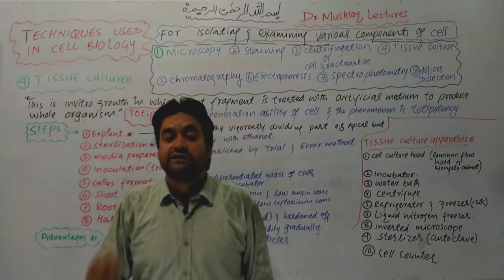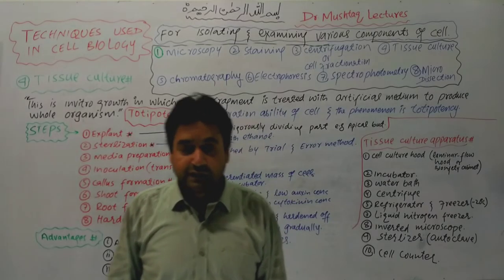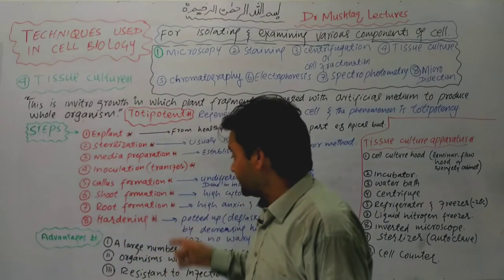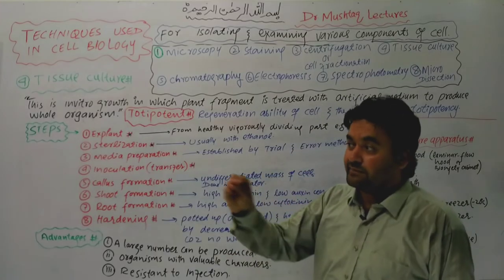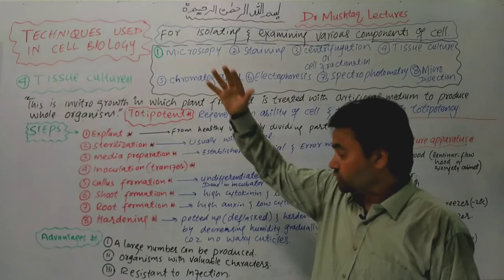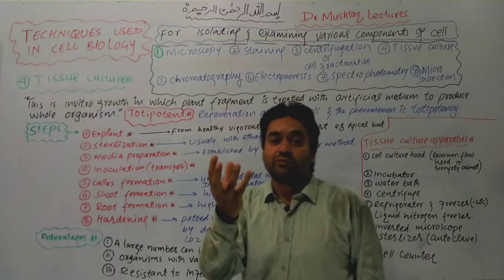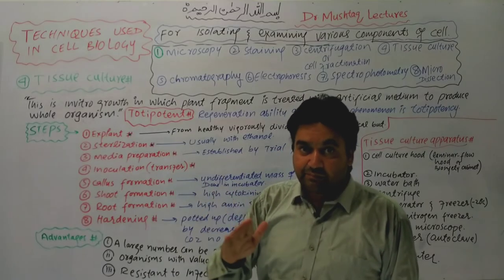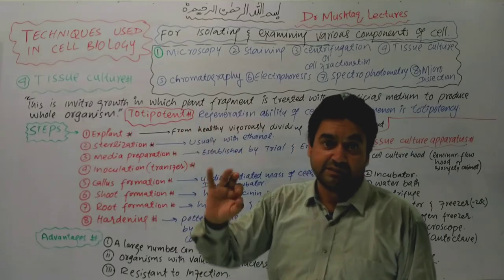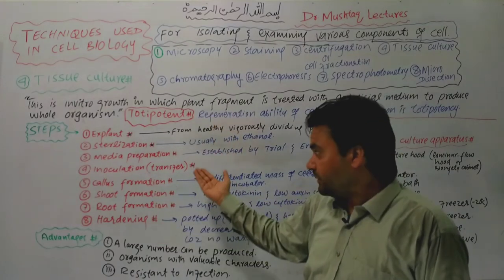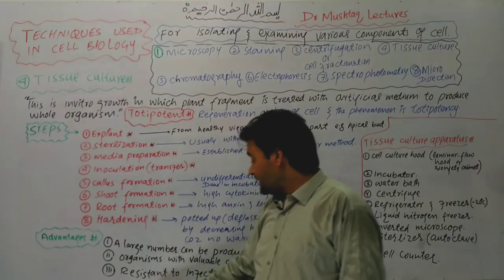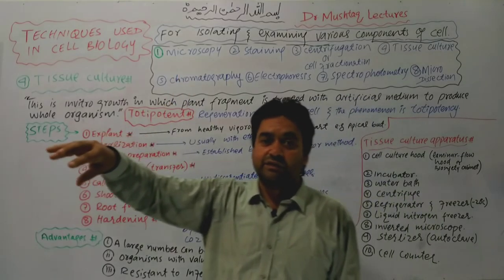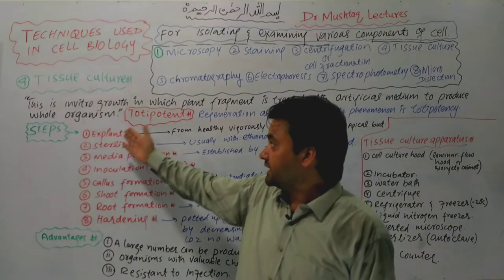A cell counter is used to count and test cells. The advantages of tissue culture include the ability to produce large numbers of plants in a very short time. Organisms with valuable and desirable characteristics can be reproduced as exact copies. Tissue culture also provides resistance to infection in the produced plants.